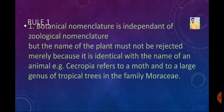Rule number 1 states that if a plant has a name that matches an animal name, we will reject it. For example, this crop is a moth and a tropical tree which belongs to the family Moraceae.